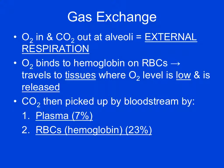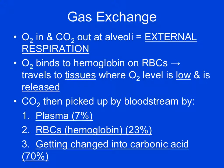Those two methods — dissolved in plasma and bound to hemoglobin — account for about 30% of the carbon dioxide carrying capacity. The remainder is converted into carbonic acid, and that's actually the majority of how carbon dioxide travels back to the lungs to be released from the body.